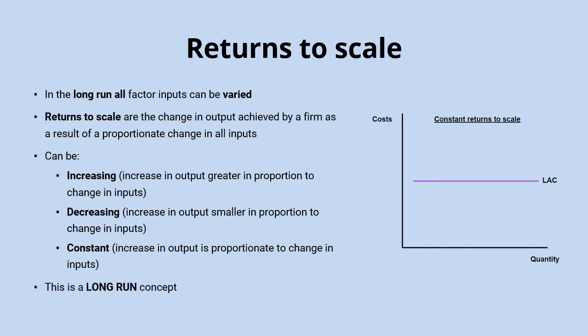It's very, very common to confuse decreasing marginal returns with decreasing returns to scale. It's important to note that returns to scale is a long run concept, whereas diminishing marginal returns is a short run concept. Diminishing marginal returns happen in the short run, and decreasing returns to scale can happen in the long run depending on how output responds to those changing inputs.